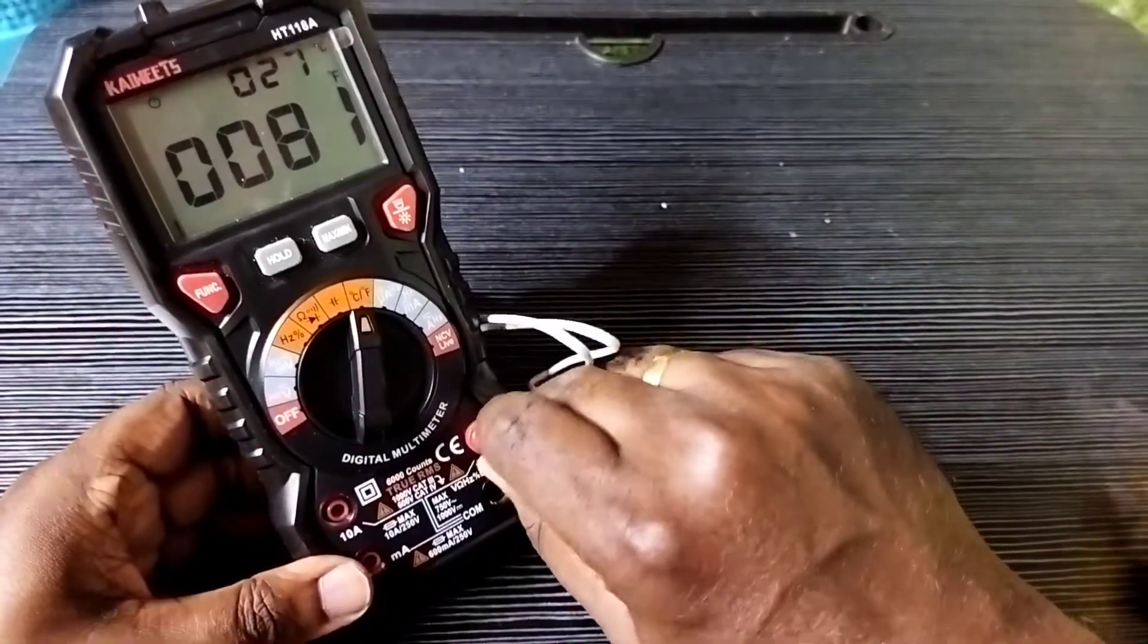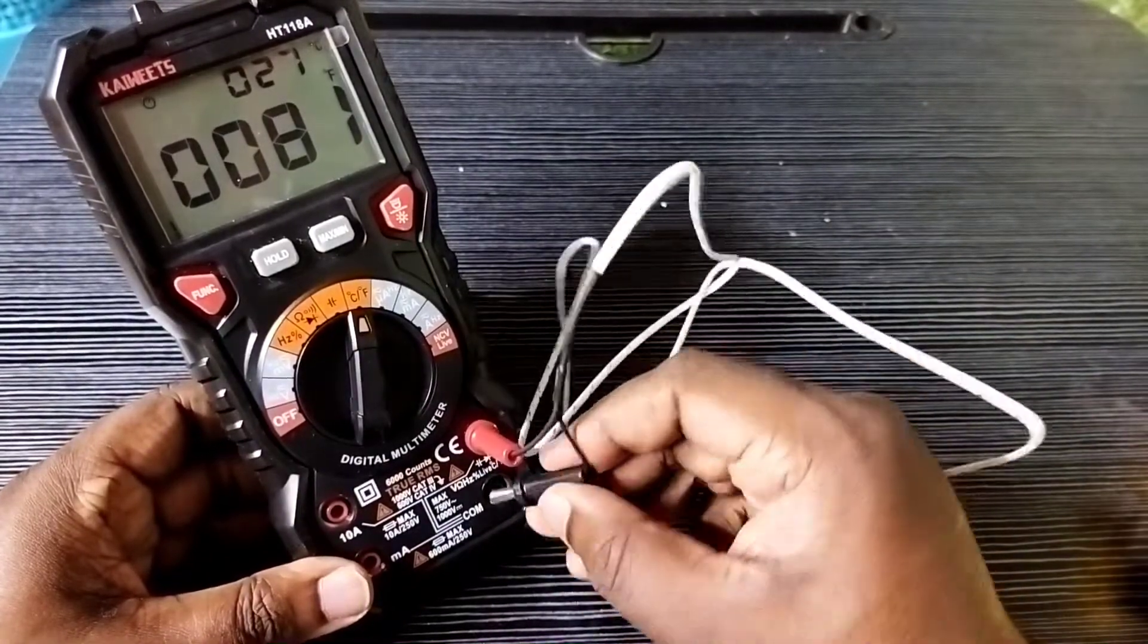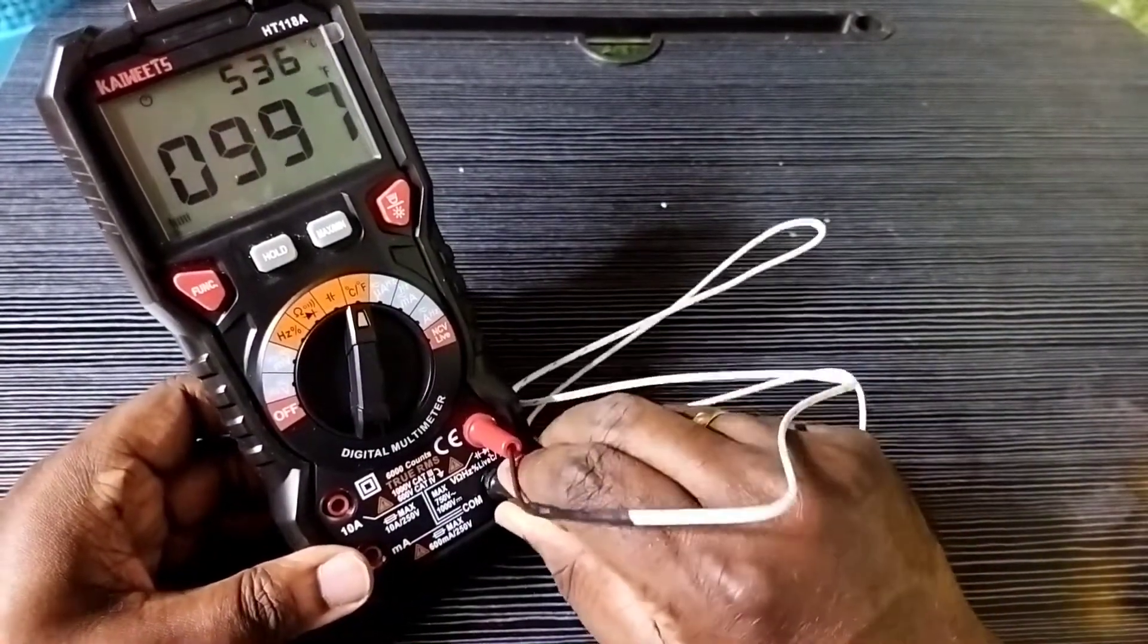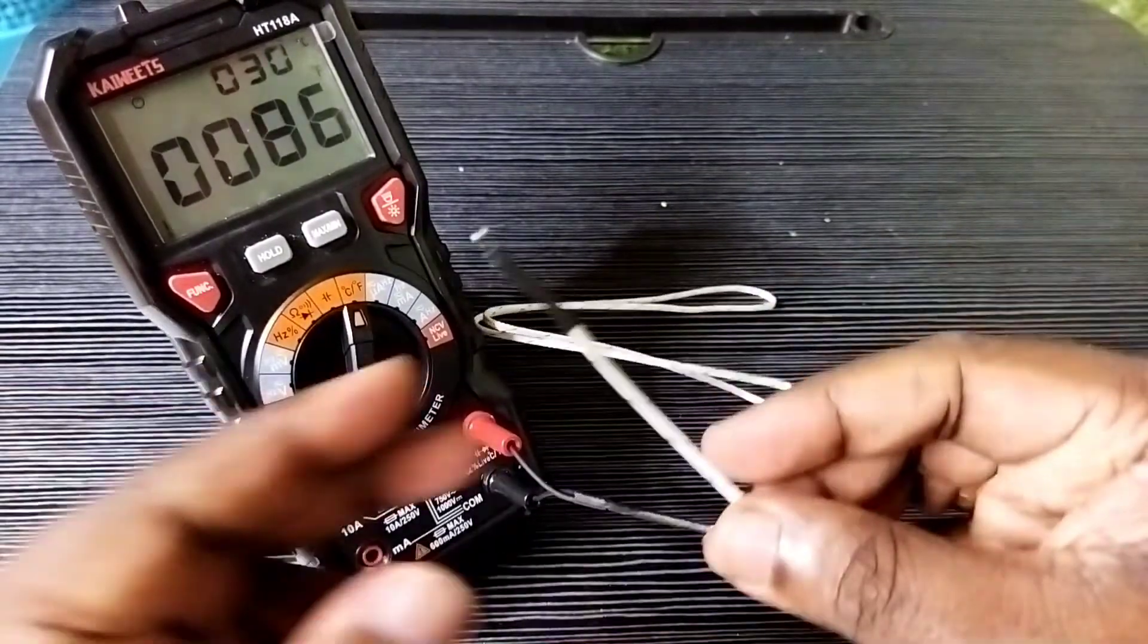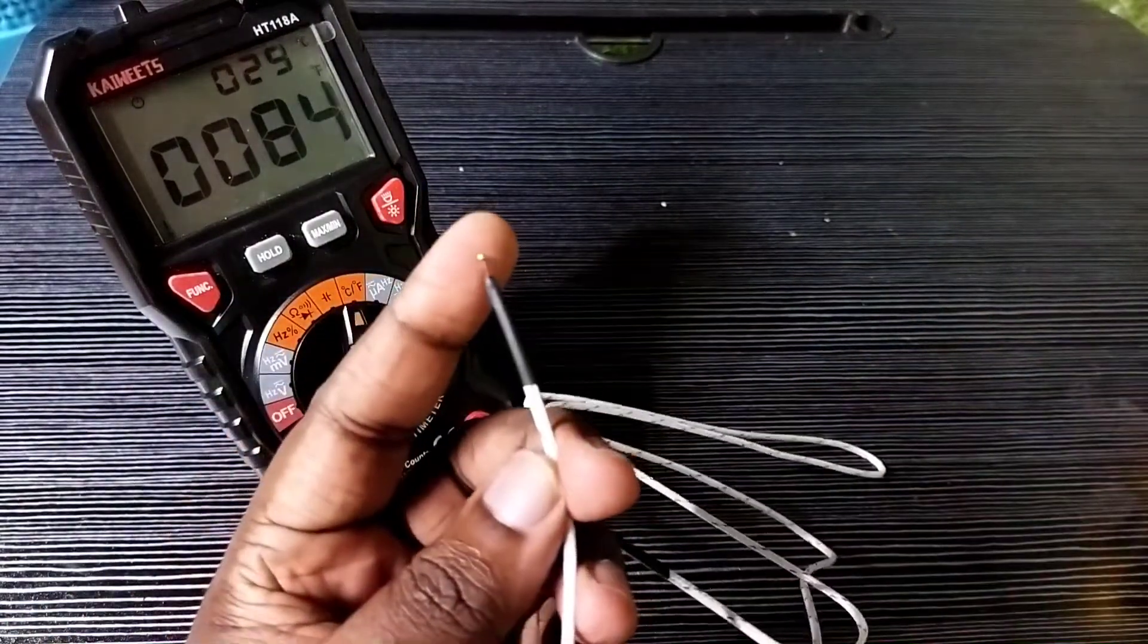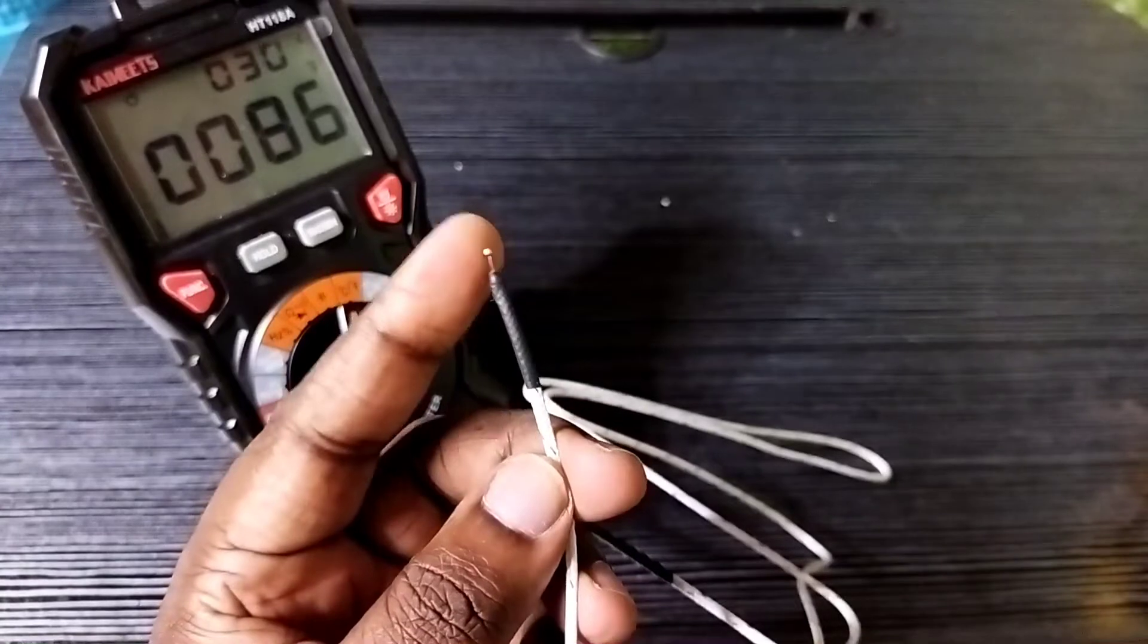The red cable we need to connect to the V terminal and black cable to the COM terminal like this. So this is the cable which we can use to measure the temperature, this is a special cable which is coming with this multimeter.